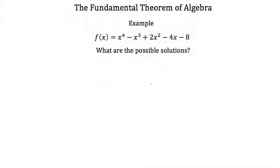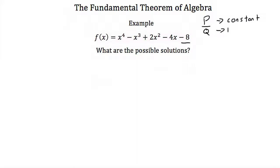Next we're asked what are the possible solutions. We can use the rational zero theorem to find some of our real solutions. The rational zero theorem states that p over q gives our possible solutions, where p is a factor of our constant term — here that's negative 8 — and q is a factor of our leading coefficient, which here is just positive 1.